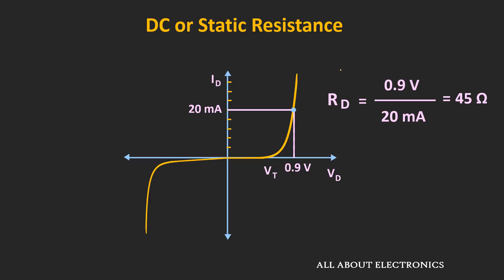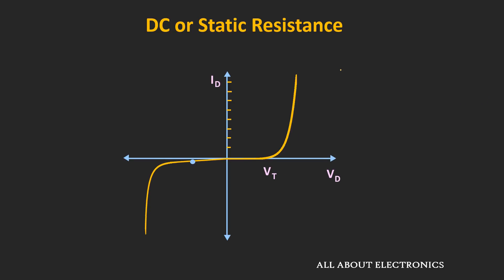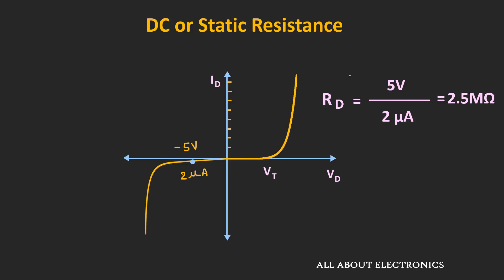When the diode is forward biased, the DC resistance offered is known as the DC forward resistance. When operated in reverse bias, it is known as the reverse DC resistance. For example, if the diode is in reverse bias with 5V (minus 5V) applied and a current of 2 μA flowing, the resistance equals 5V divided by 2 μA, which is 2.5 MΩ. In the reverse bias condition, the resistance offered by the diode is very large.